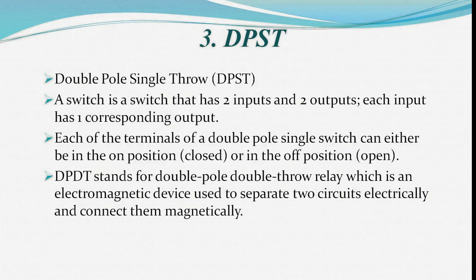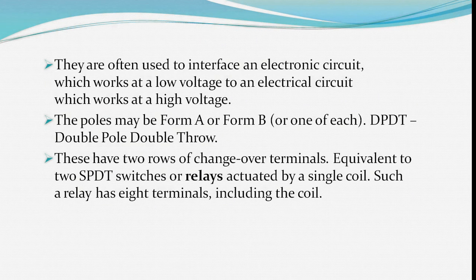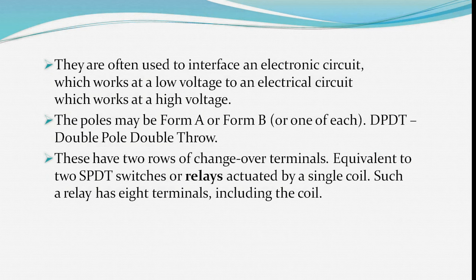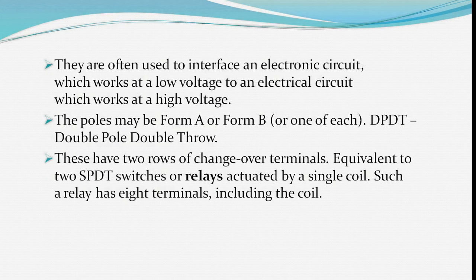DPDT stands for Double Pole Double Throw relay — an electromagnetic device used to separate two circuits electrically and connect them magnetically. They are often used to interface an electronic circuit working at a low voltage to an electrical circuit working at a high voltage. The poles may be Form A, Form B, or one of each. DPDT relays have two rows of changeover terminals, equivalent to two SPDT switches actuated by a single coil.